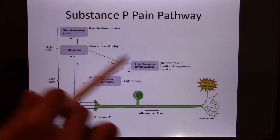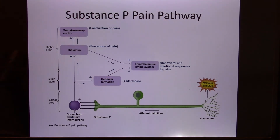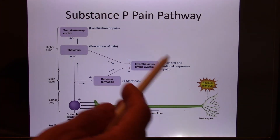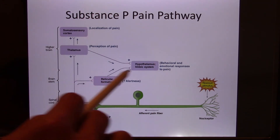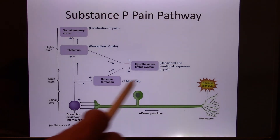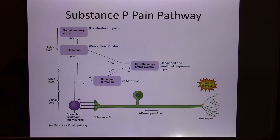Why does the pain signal go to the limbic system? What's the function of the limbic system? Emotion and memory. The amygdala handles emotion — especially negative emotion — and the hippocampus handles memory. That's the limbic system. So why does the pain sensation need to go there? If you've been burned, you remember it forever — that's the purpose.